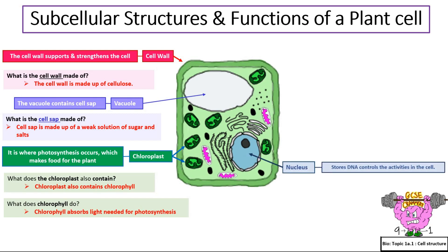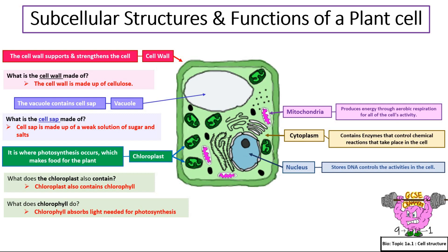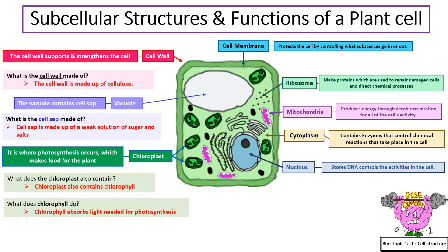What is the function of a nucleus? It stores the genetic material and controls the activity in the cell. What else does cytoplasm contain? Cytoplasm contains enzymes that control chemical reactions. What are mitochondria needed for in a cell? Mitochondria produce energy through aerobic respiration for all of the cell's activity. What is the function of a ribosome? Ribosomes make proteins, which are used to repair damaged cells and directing chemical processes. What is the function of a cell membrane? It protects the cell by controlling what substances go in and out.